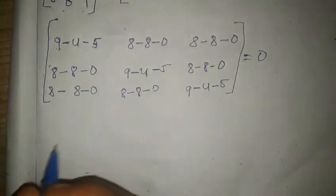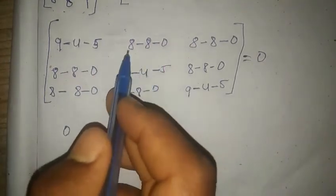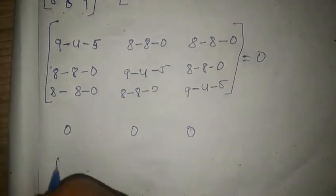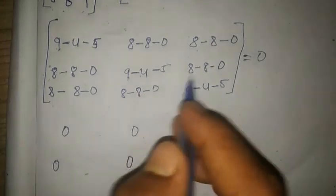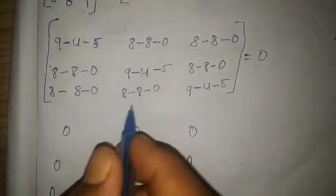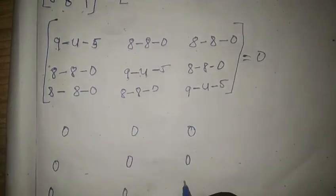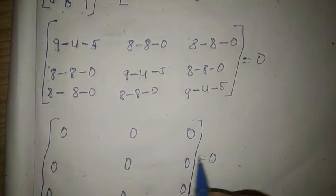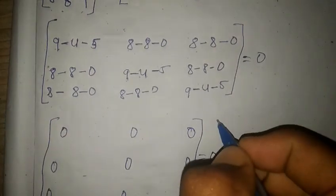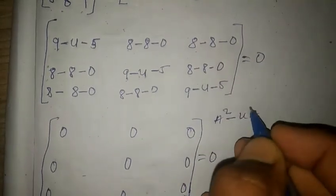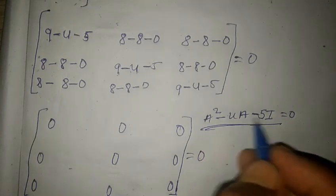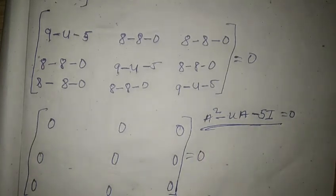All elements give zero: 8-8=0, 8-8=0, 9-4-5=0. So the result is the zero matrix, which equals 0. Therefore we have proved that A² - 4A - 5I = 0. If you like this explanation, please subscribe to my channel.